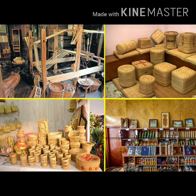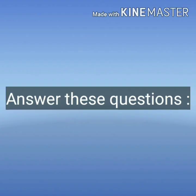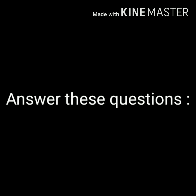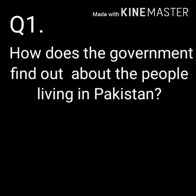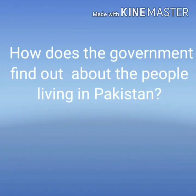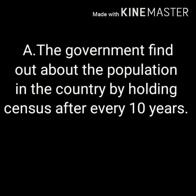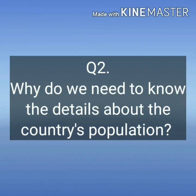Now, as we have understood the basic concept of the whole chapter, we are going to discuss questions and answers which are on page number 63. The first question is: how does the government find out about the people living in Pakistan? The answer is the government finds out about the population by holding a census after every 10 years.